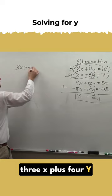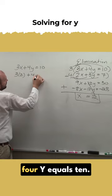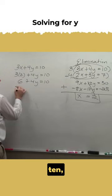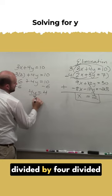I know what x is. 3 times 2 plus 4y equals 10. 6 plus 4y equals 10. Subtract 6, subtract 6. 4y equals 4. Divide by 4. Divide by 4. Y equals 1.